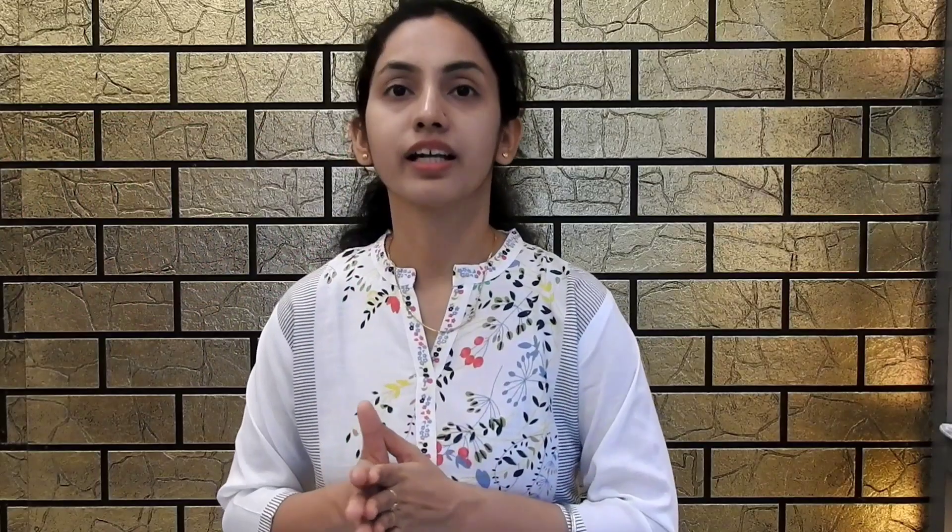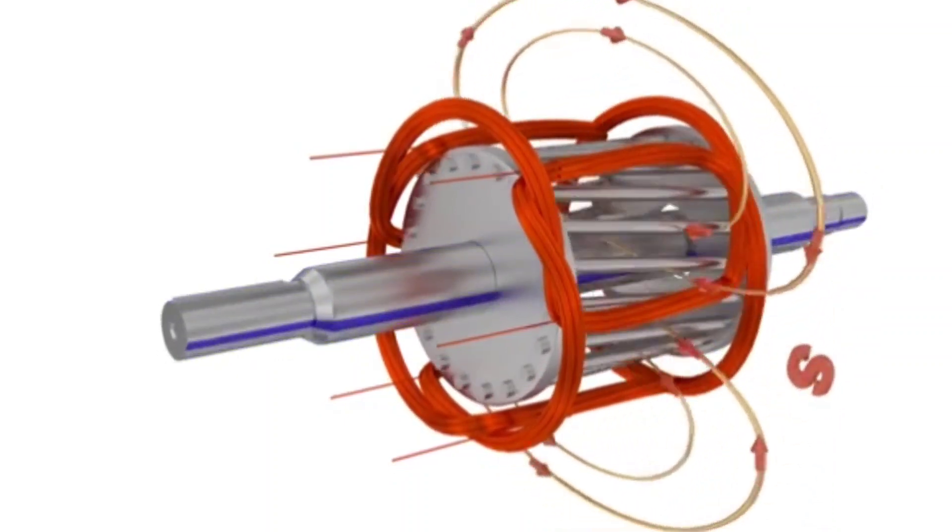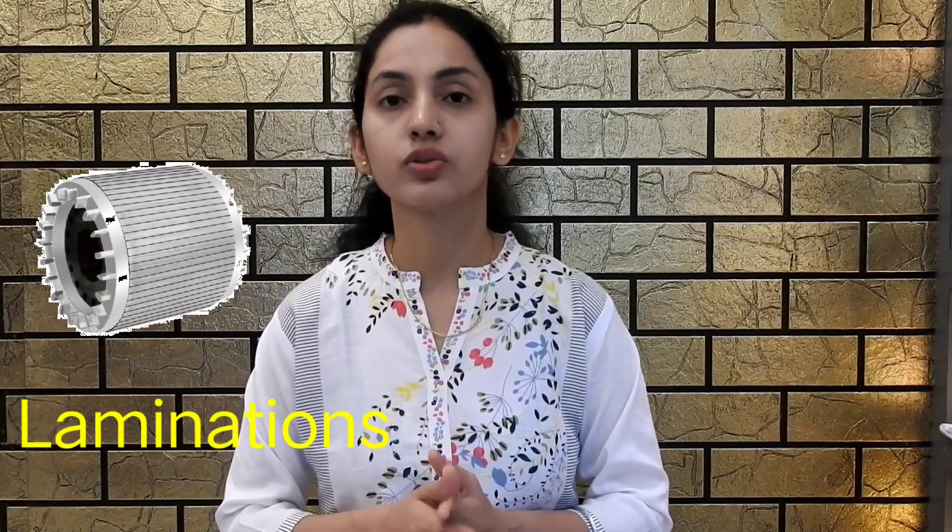Now let's look at the construction of an AC motor. The alternating current drives the AC motor, and the stationary stator and the rotating rotor are its important parts. The stator is the stationary part of the motor that delivers a rotating magnetic field to interact with the rotor. The stator core is made of thin metal sheets known as laminations, which are used to reduce energy loss.